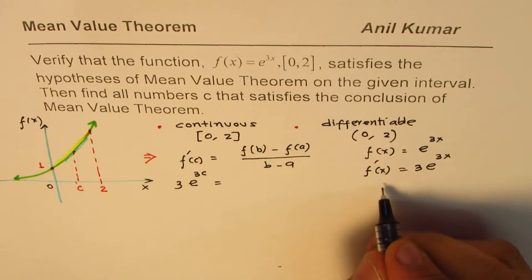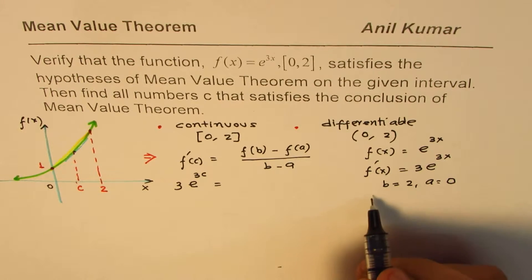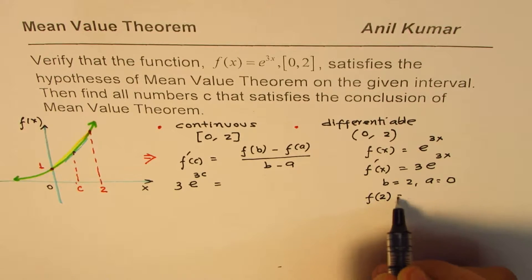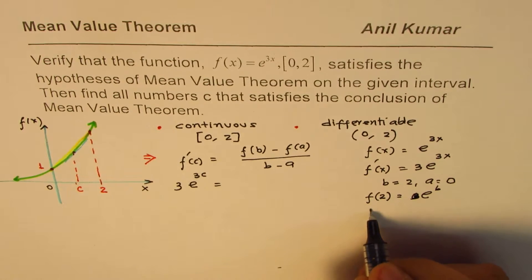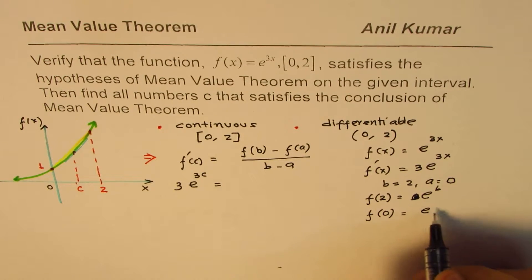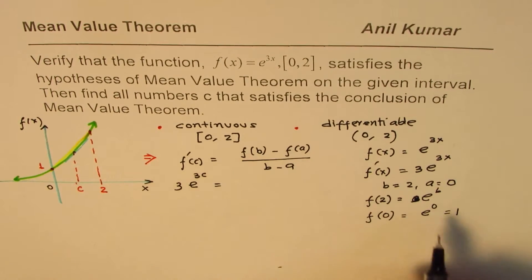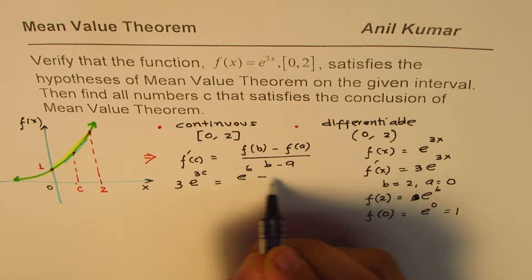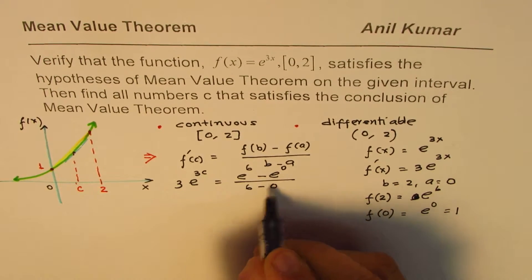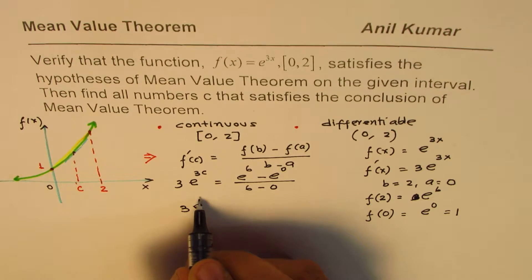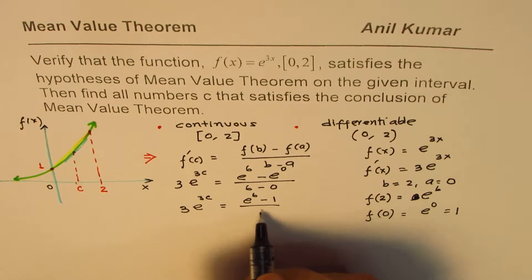Now, b = 2 and a = 0. So f(b) = f(2) = e^(3·2) = e^6, and f(a) = f(0) = e^0 = 1. Substituting into the MVT equation: 3e^(3c) = [e^6 − 1] / (2 − 0), which gives 3e^(3c) = [e^6 − 1] / 6.